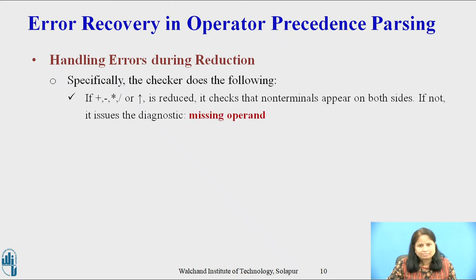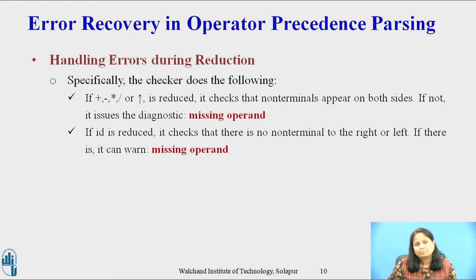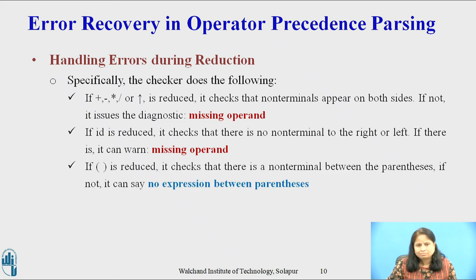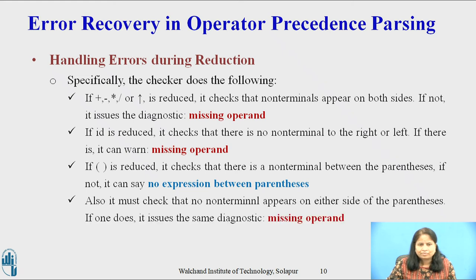Specifically, the checker does the following. If plus, minus, multiplication, division, or exponentiation is reduced, then there should be a non-terminal on both sides. If not, issue the diagnostic 'missing operand'. If ID is reduced, it checks whether there is any non-terminal to the right or the left; if there is, issue 'missing operator'. If left parenthesis and right parenthesis is reduced, it checks that there is a non-terminal between the parentheses. If not, it says 'no expression between parentheses'. Also, it must check that no non-terminal appears on either side of the parentheses; if one occurs, issue the diagnostic 'missing operand'.